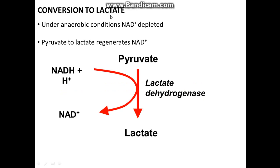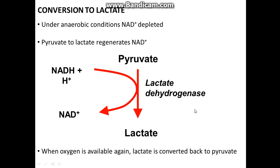Conversion to lactate happens in animals when there's not enough oxygen for the tricarboxylic acid cycle. When you've not got enough NAD+, pyruvate to lactate regenerates NAD+. You get your NADH and a proton go around and become NAD+. Pyruvate is converted to lactate by lactate dehydrogenase. And when oxygen is available again, lactate is converted back to pyruvate.